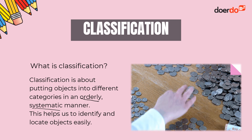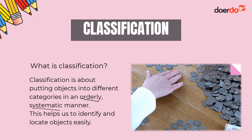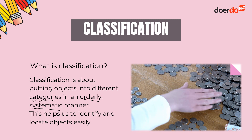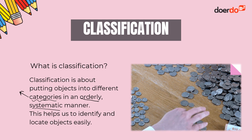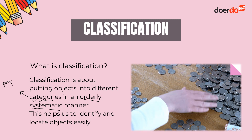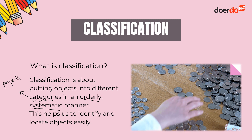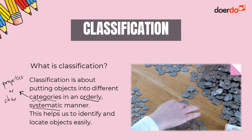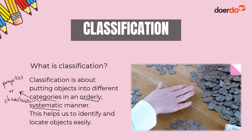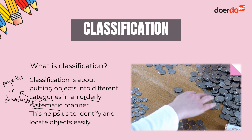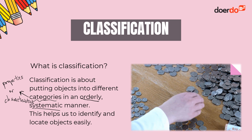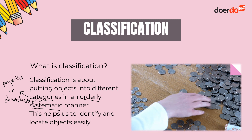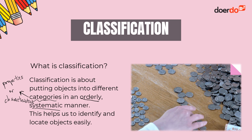Classification allows us to find and locate items that we group or separate based on their properties. We put objects into different categories and split them by their properties — normally materials or characteristics. Characteristics are mainly for living things, and this is why classification is very important.